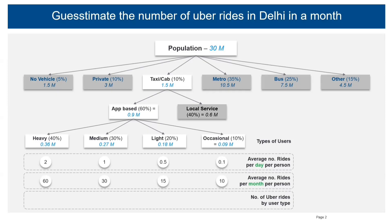To arrive at the number of Uber rides per user type, I'll multiply 60, 30, 15, and 10 by the number of users in each category.